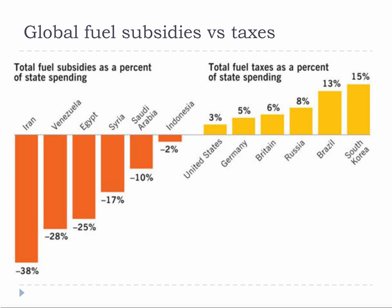There are countries that subsidize fuel and countries that tax it. Fuel is such a massive commodity that this can have major effects on a country's budget. Iran's subsidies cut into its spending budget by 40%, whereas South Korea's high fuel taxes bring in 15% of its spending budget — major differences depending on whether or not you tax or subsidize.